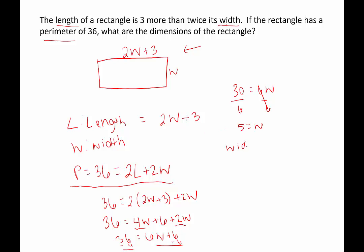So now we know the width is 5, but it asks us to find the two dimensions. So we'll figure out the length by plugging 5 in for W back in this expression that we had to represent length. So that would be 2 times 5 plus 3. That would be 10 plus 3. The length is 13.